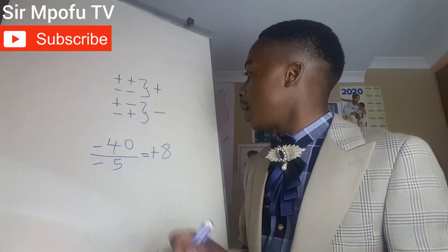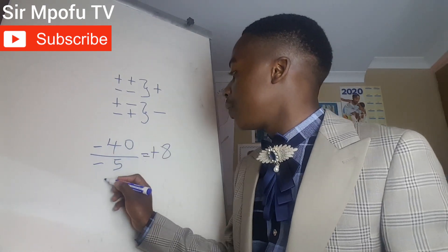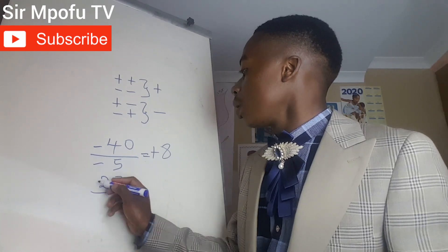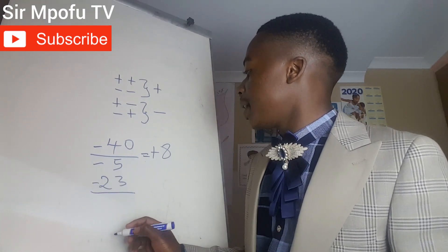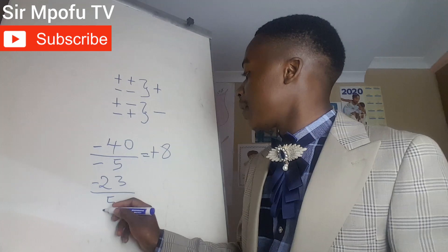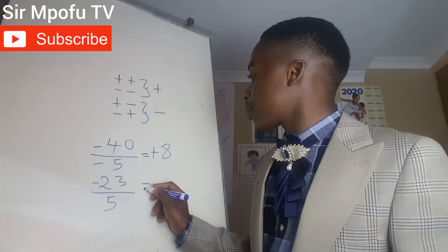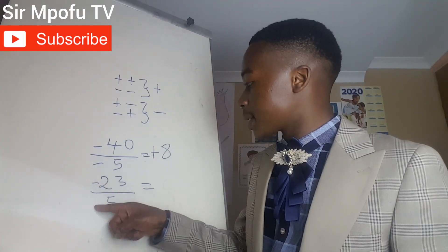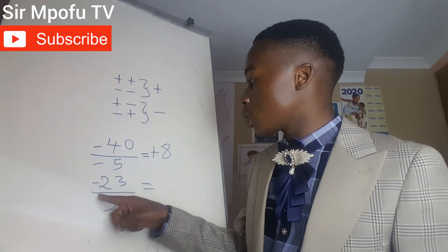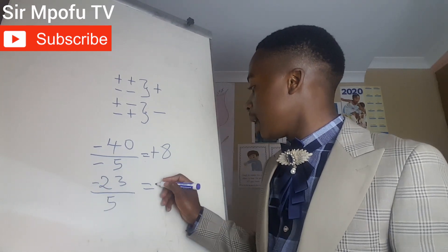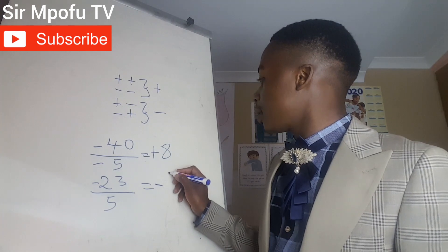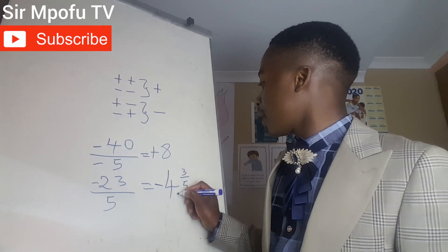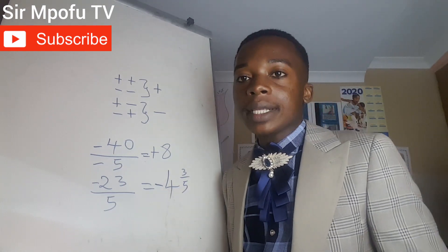What if you have negative 23 divided by 5? You have different signs — a negative and a positive — so you get a negative. Then 5 into 23 goes 4 remainder 3, so this will be negative 4 and 3 over 5 as our final answer.